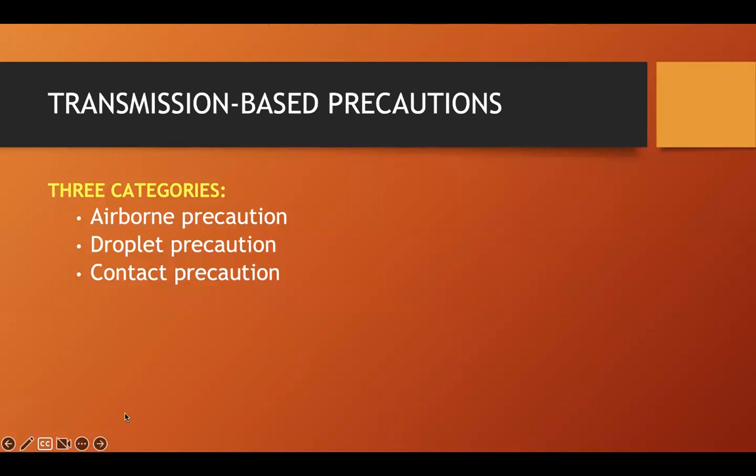Transmission-based precautions are isolation guidelines that were revised in 1996, intended for patients diagnosed with or suspected of having a specific transmissible disease. There are three categories: airborne precaution, for patients known or suspected to have illness transmitted through small particle airborne droplets of 5 micrometers or less which may be suspended in the air.